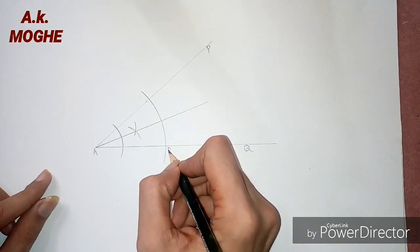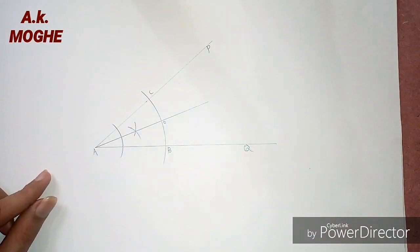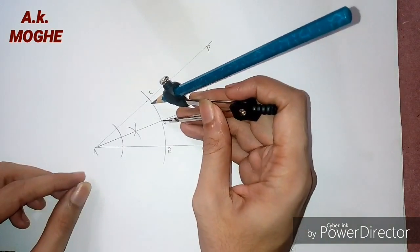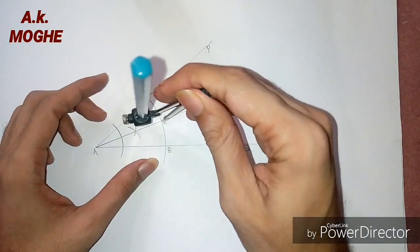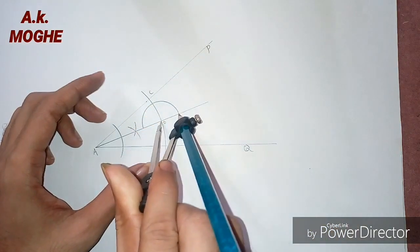After doing so, we will get one intersection point on the 6 cm arc as O. Then we will draw two points on either side of the angle bisector line.